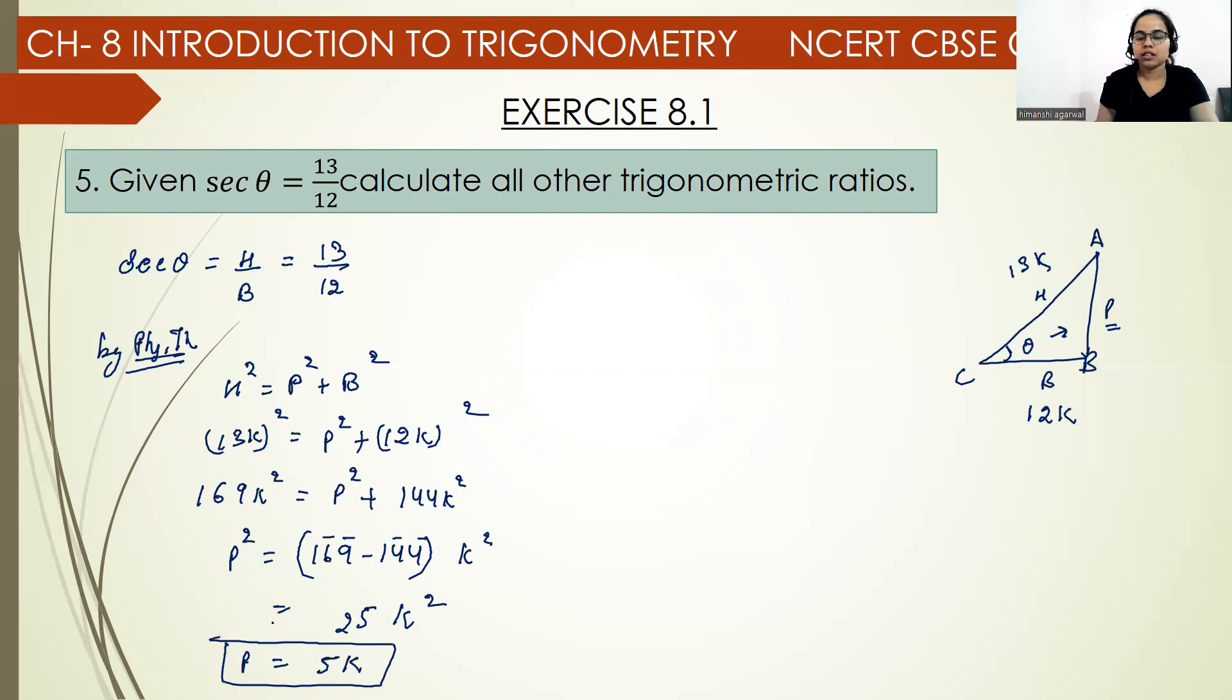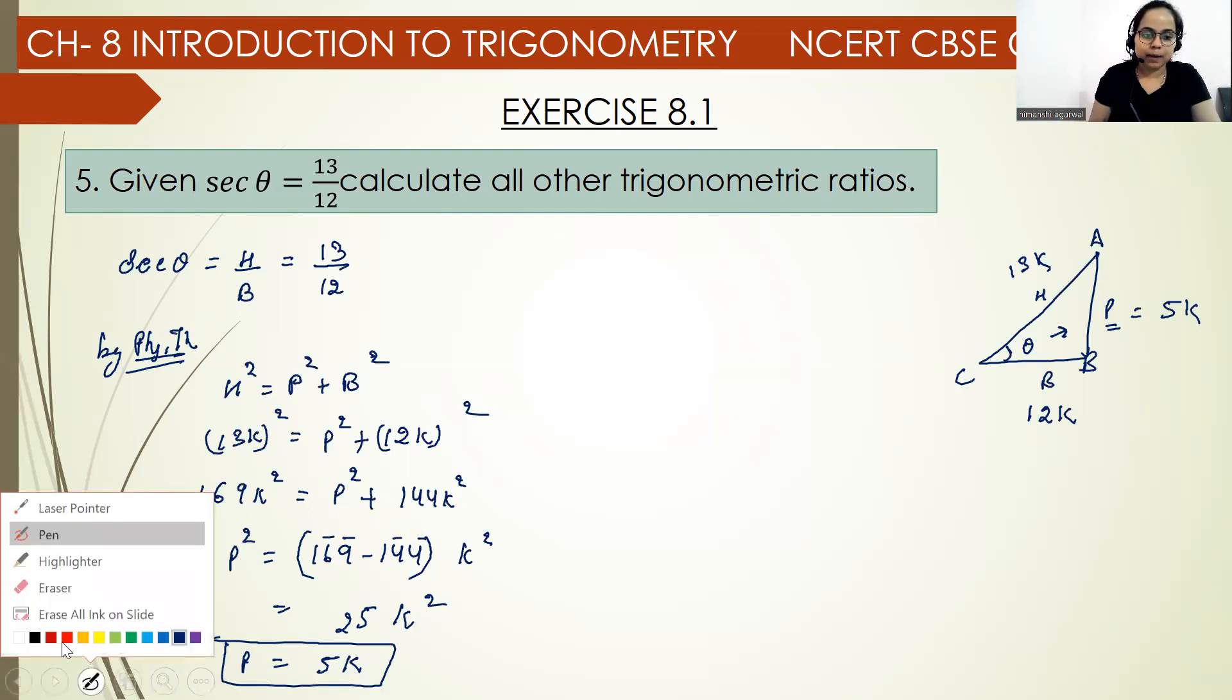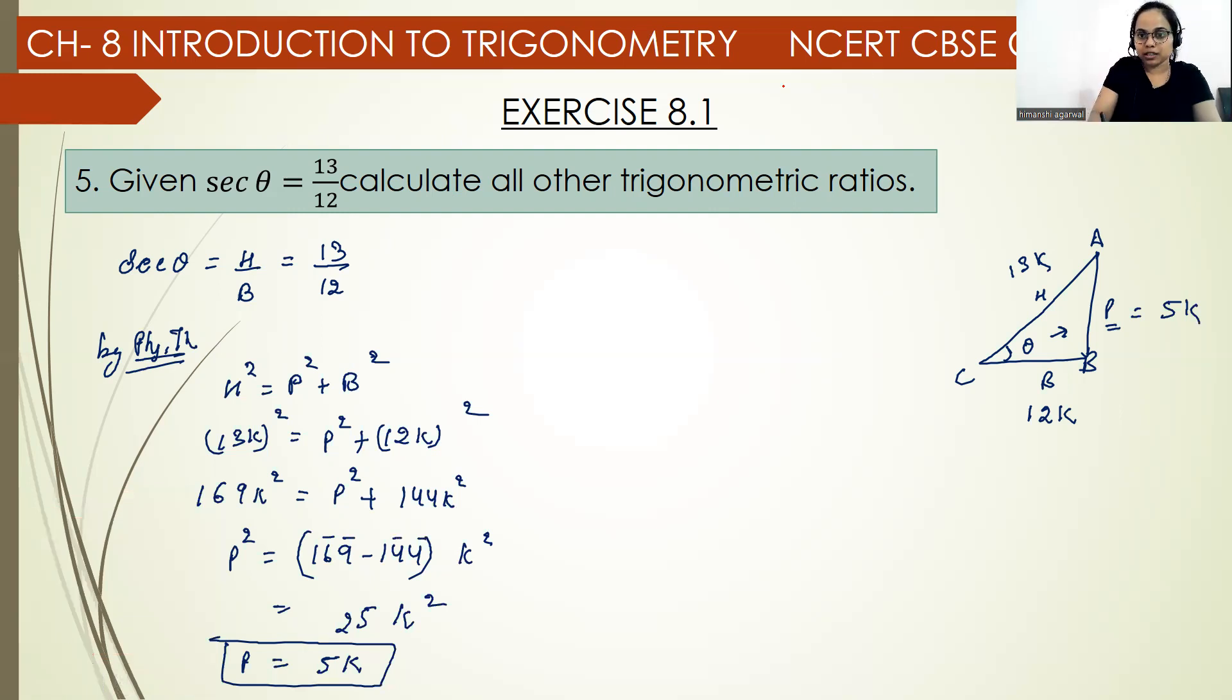Perpendicular equals square root of 25k square, which is 5k. So here we have perpendicular as 5k. Now let us write all the trigonometric ratios. We're going to calculate sin theta, cos theta, tan theta, cosec theta, sec theta, and cot theta.